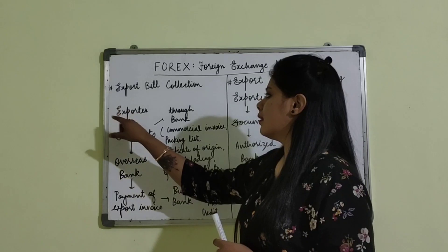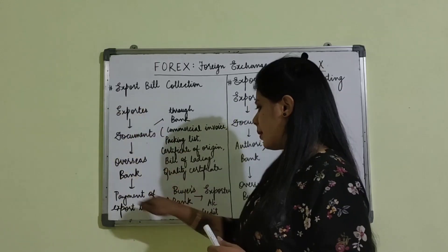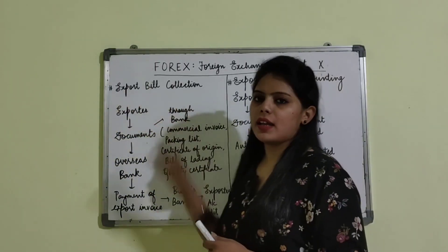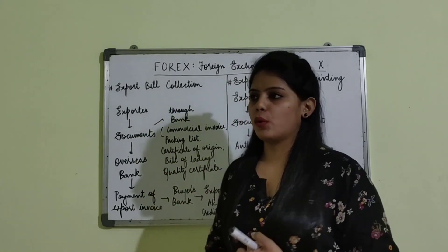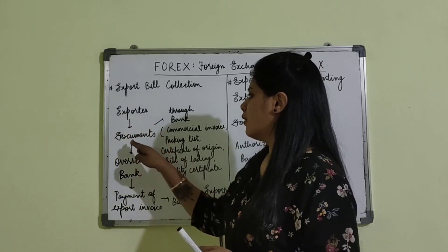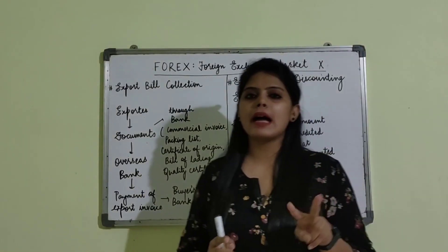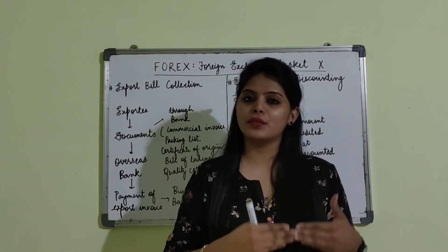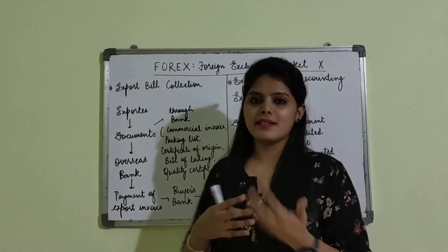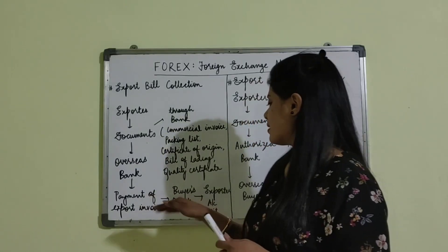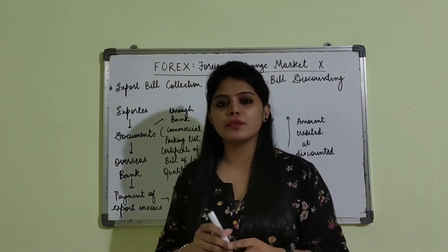In this case, the process of bill collection is that the exporter — this is the complete process of export bill collection — sends documents to receive the amount of the export. Now there are two banks in a process of export: first is the bank of the exporter, which is the authorized bank, and second is the overseas bank, that is the bank of the importer.